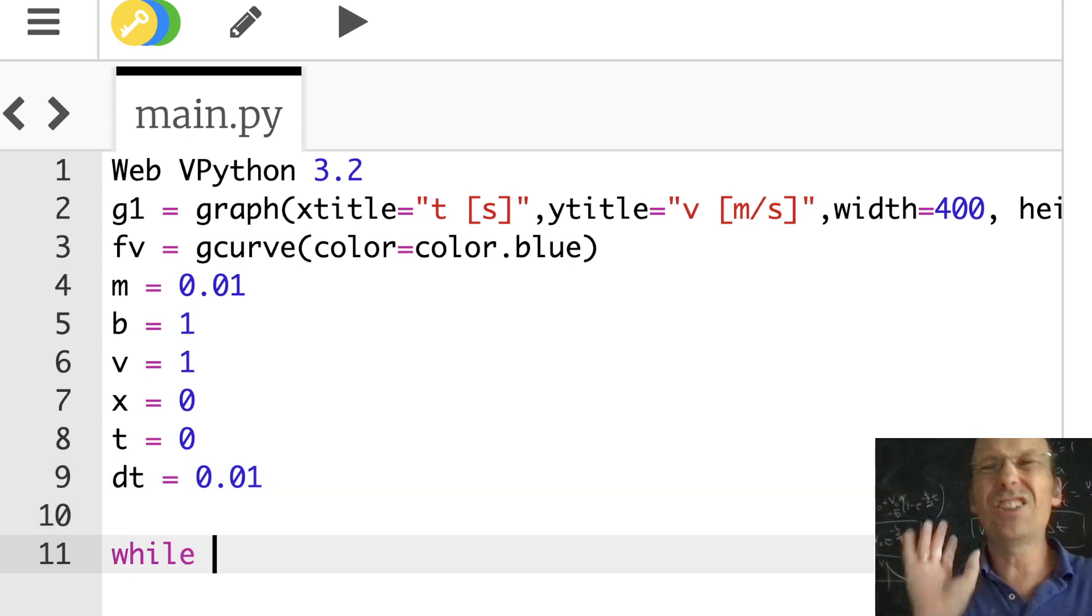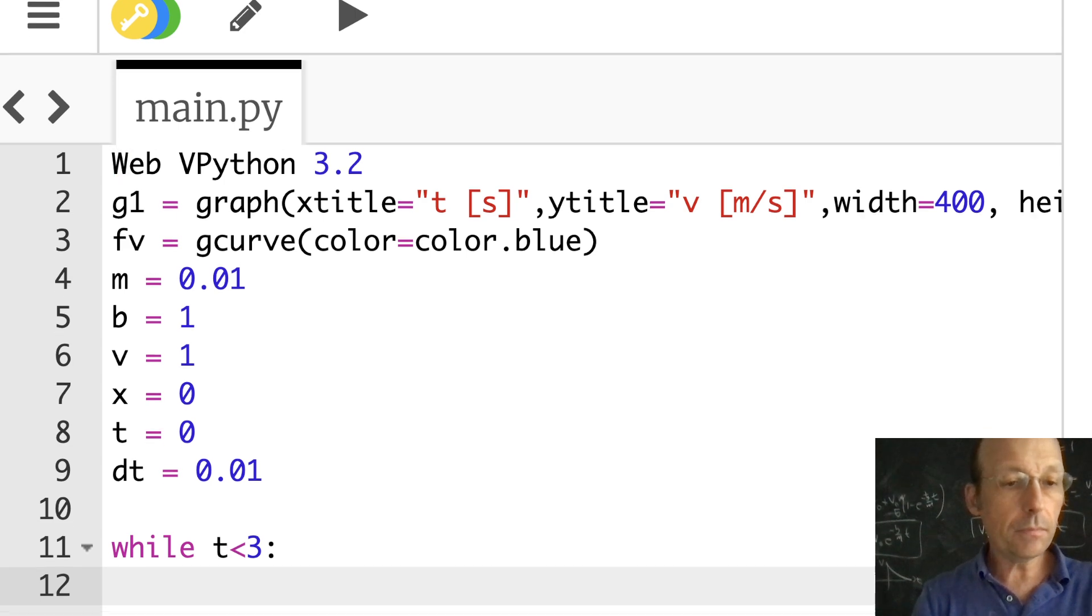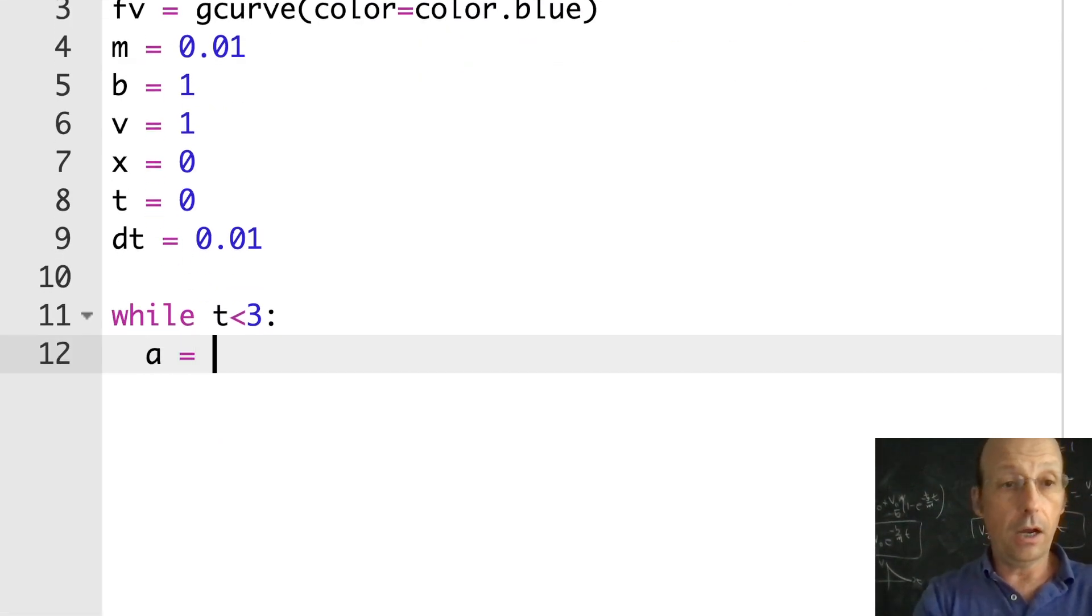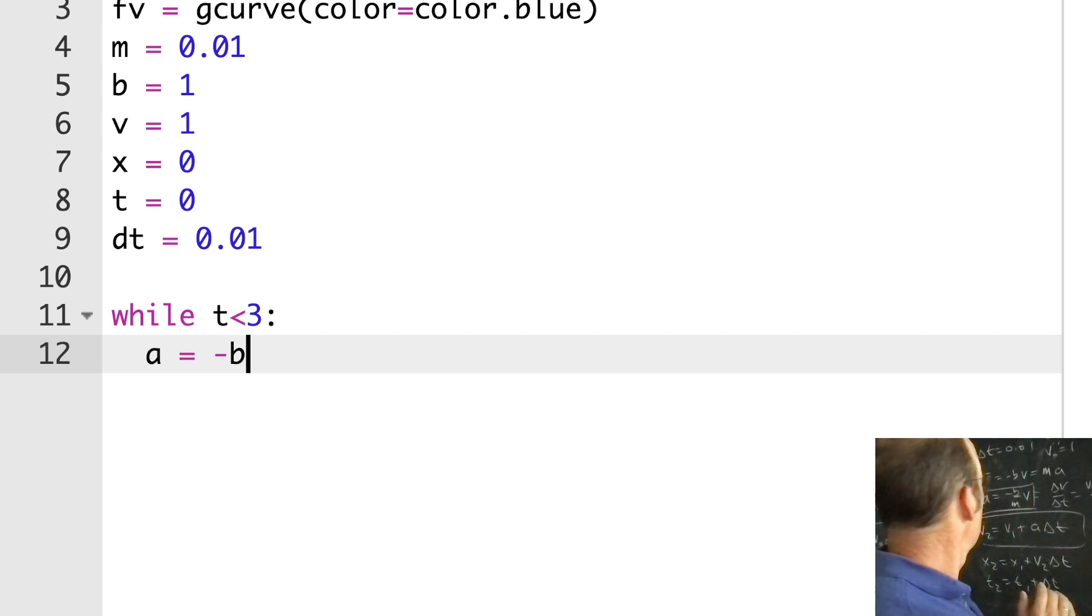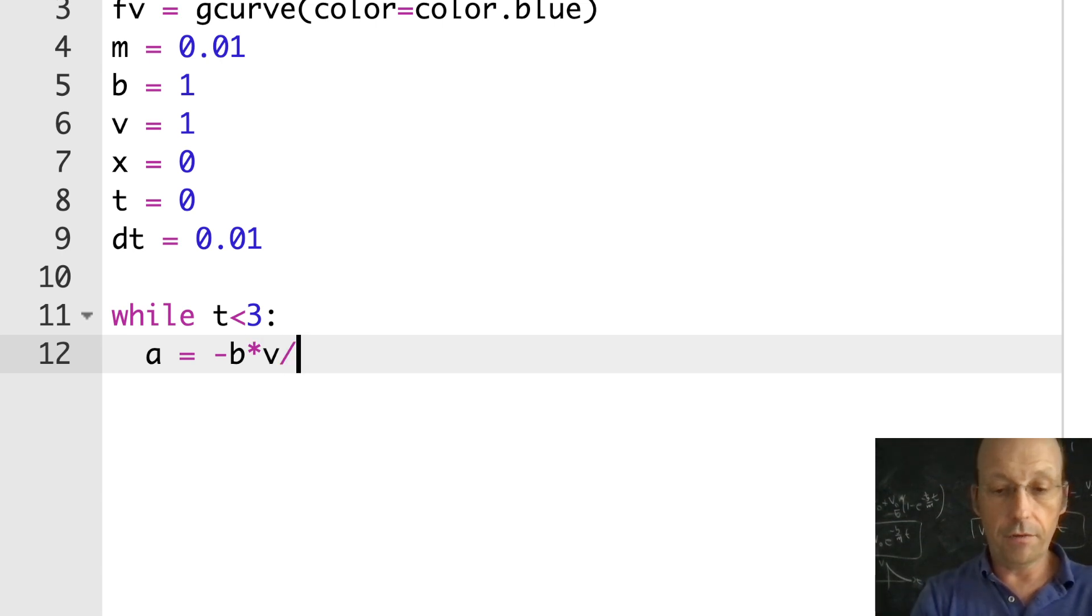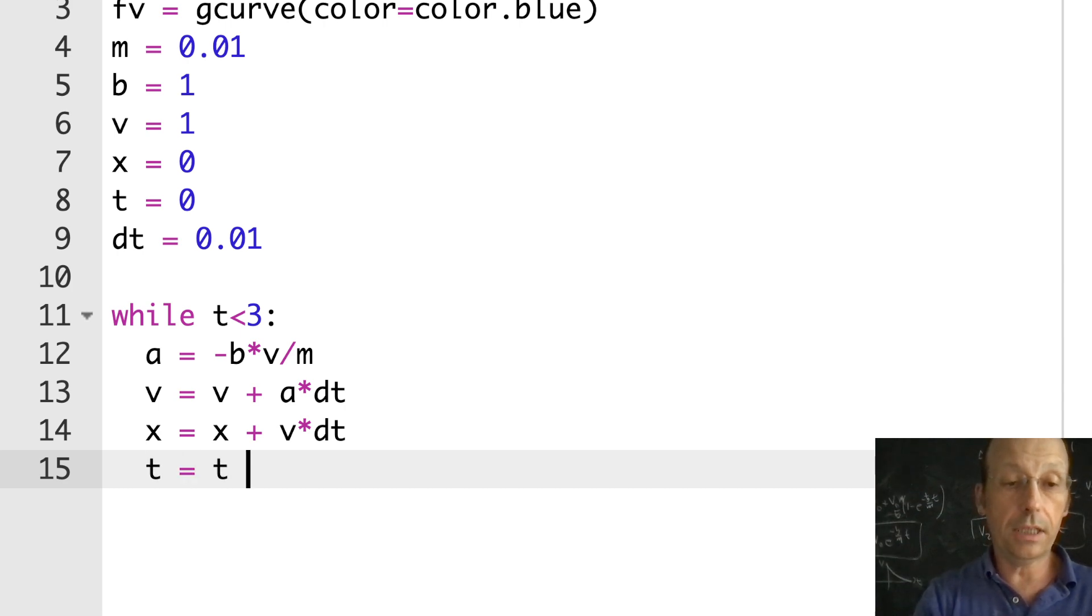Let's run this while t is less than 3. First I'm going to calculate the acceleration: negative b times v divided by m. So v starts off with some value, but v is going to change. Now I'm going to update my velocity: v equals v plus a times dt. Now update my position: x equals x plus v times dt. Then update time: t equals t plus dt. If you don't do that, you're going to run forever. I'm going to plot it: fv.plot(t,v). Let's see if this works.